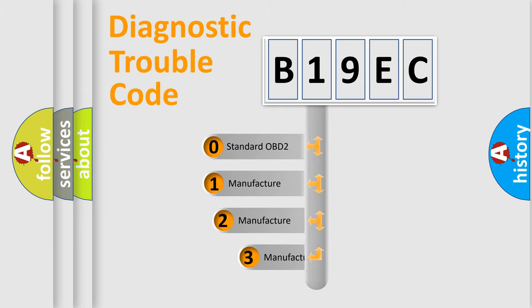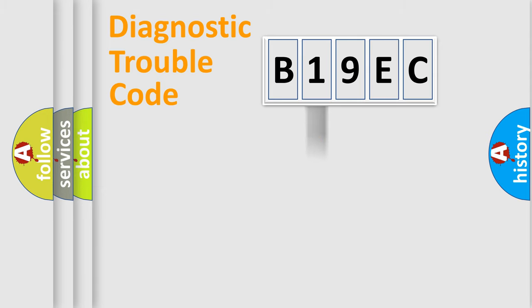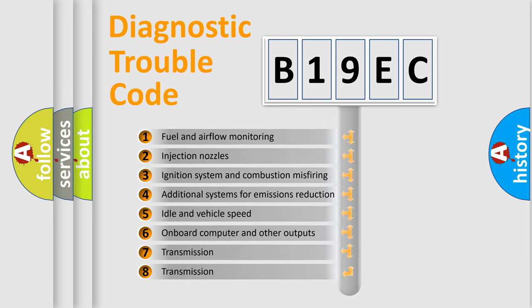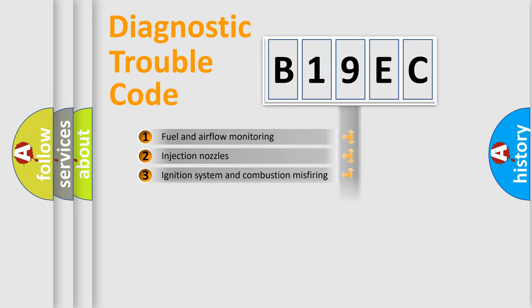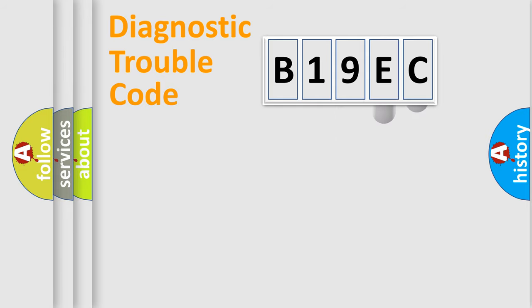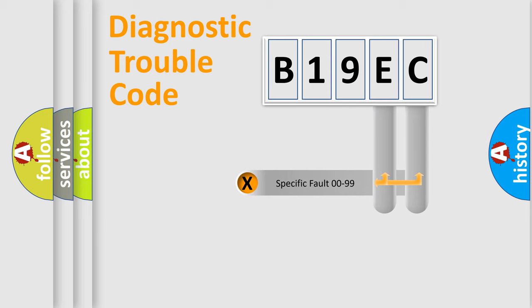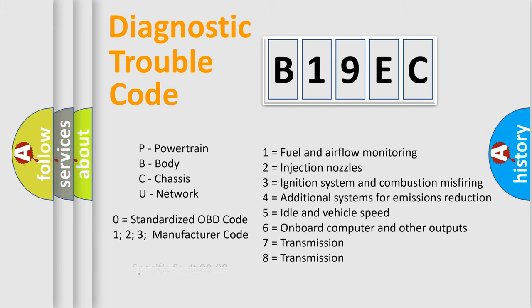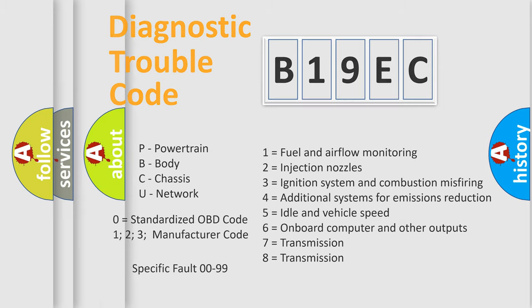If the second character is expressed as zero, it is a standardized error. In the case of numbers 1, 2, or 3, it is a manufacturer-specific error expression. The third character specifies a subset of errors. This division is valid only for the standardized DTC code, where only the last two characters define the specific fault of the group. Such a division is valid only when the second character is the number zero.